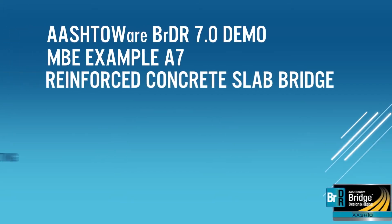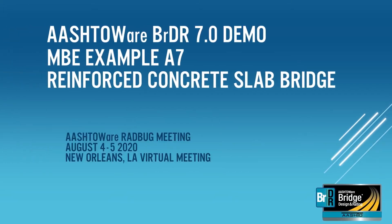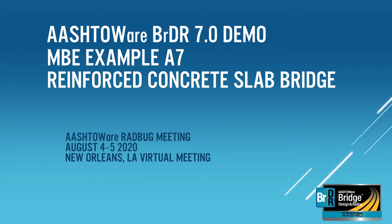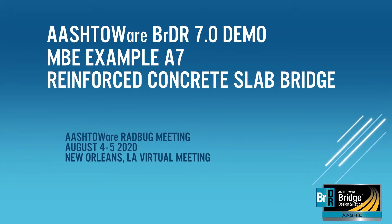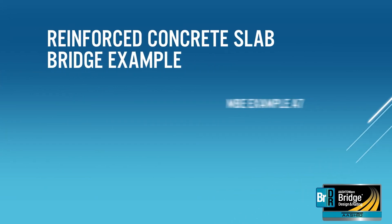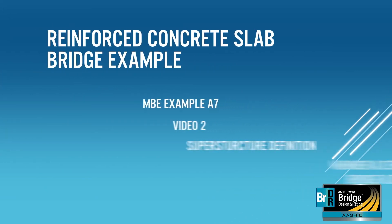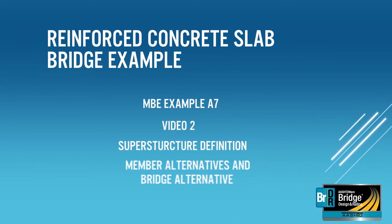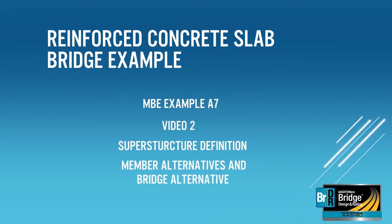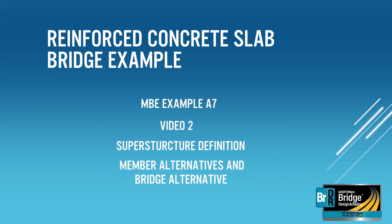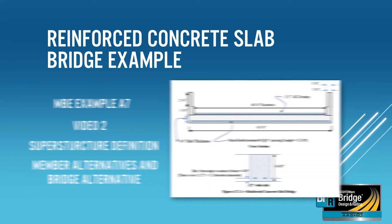In this training tutorial, we will continue to enter the reinforced concrete slab bridge from example A7 from the Manual for Bridge Evaluation. In video 2, we will create a superstructure definition, define slab member alternatives, and define bridge alternative.